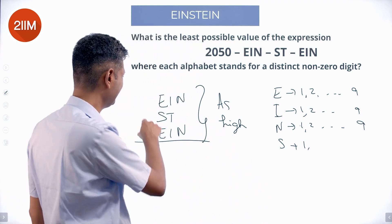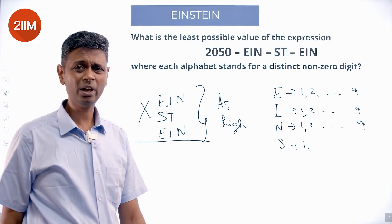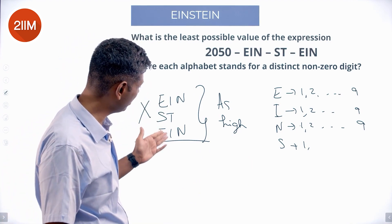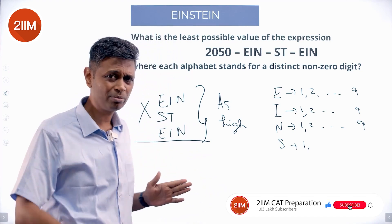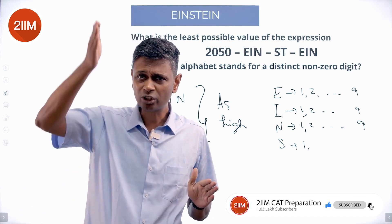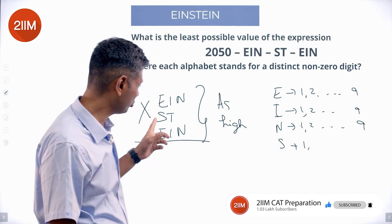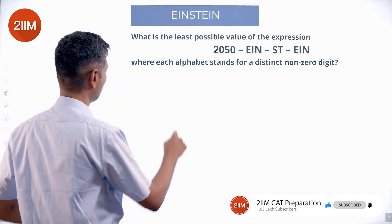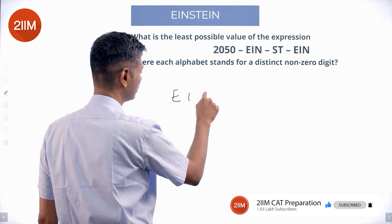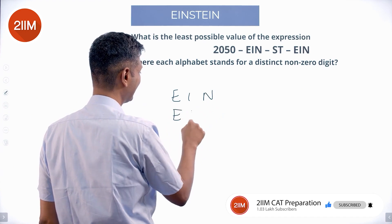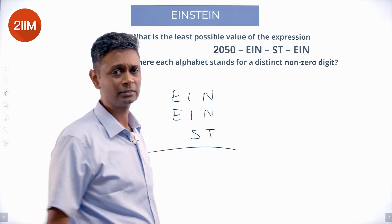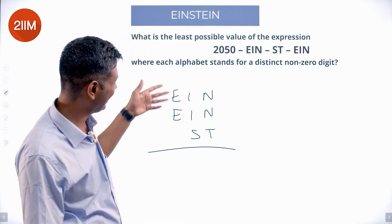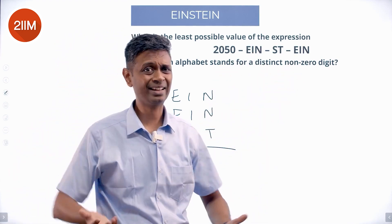The moment I write it like this I say, hey, this is very silly. I should not write it like this. Why? Three-digit number, three-digit number, two-digit number - I'll get confused. I should make sure that my hundreds, tens, and units are all proper. I should write EIN + EIN + ST, writing EIN next to each other because it repeats, which makes our life easier.